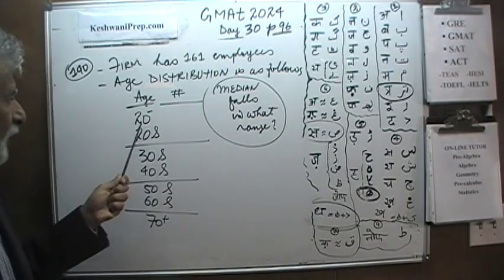Here's the problem. It's a very straightforward simple problem. Here's what we are told. We are told that we have a firm which has 161 employees. 161 employees and we are given the age distribution of the employees of this firm. We are told that the age distribution is as follows. People who are under 20, people who are in their 20s, people who are in their 30s, in their 40s and so on and so forth. So here's the distribution.